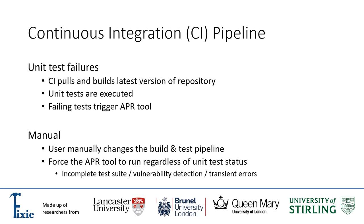As many development teams make use of some continuous integration system, such as TeamCity or Jenkins, this tooling option may be their desired preference. In this setting, the tool could be situated after the testing phase, triggering when any or a specified subset of unit tests that were deemed critical to pass fail. An intelligently designed tool will then be able to focus its attention on any suspicious code that was introduced in the latest commits that was also involved in these failing tests.